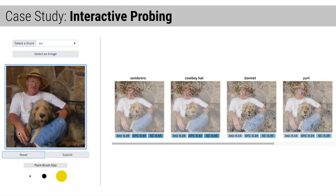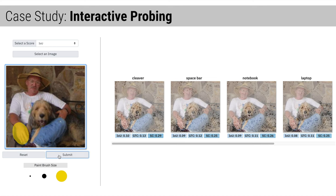Finally, we highlight the man's hand. Hand is not a label in the dataset, yet the returned classes are objects that would occur alongside a hand, like a notebook. It is promising that the model has learned correlations about unlabeled objects. However, this may warrant further analysis, because the model should not be dependent on the presence of a hand to classify a notebook. Using Shared Interest in this style of what-if analysis, we are able to rapidly test hypotheses about what the model has learned and where it might fail.